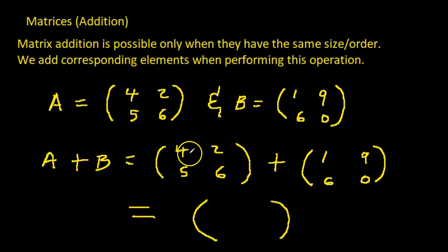Then A plus B will simply add the elements that correspond. So you'll add 4 to which element over here? Alright, so 4 corresponds with this one, so 4 plus 1, so this would be 5. 2 corresponds with which element over here? 9, so 2 plus 9, that's 11.